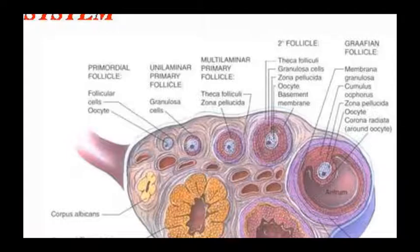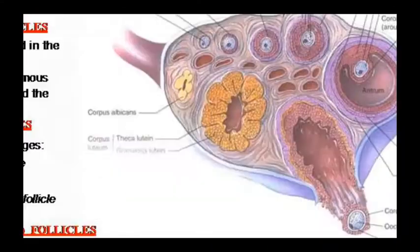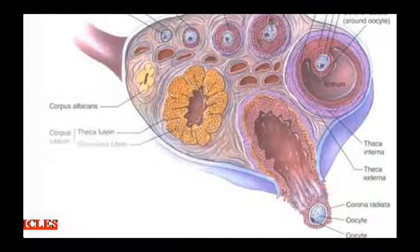When it is mature, it becomes bigger in size, which is called the graafian follicle. The membrane is granulosa, then cumulus oophorus, zona pellucida, then the oocyte, and this is the corona radiata, which radiates around the oocyte. There is the antrum cavity, and these are the outer layers — the internal theca and external theca.